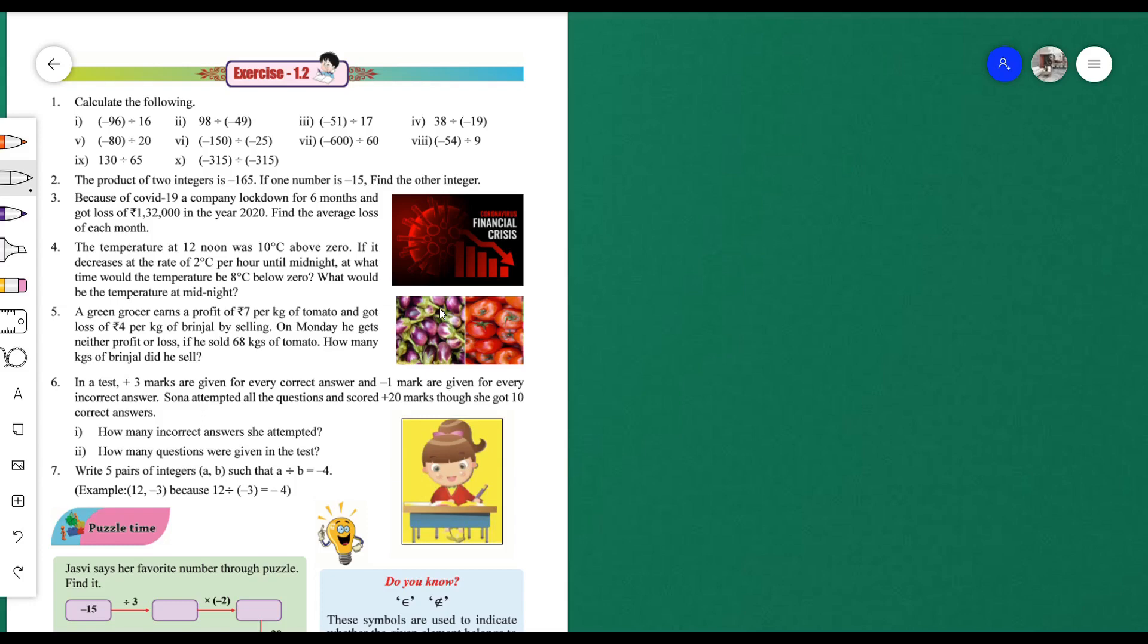Seventh one: minus 600 divided by 60. Direct answer: 60 times 10 equals 600, so the answer is minus 10. Eighth one: 65 times 2 is 130.